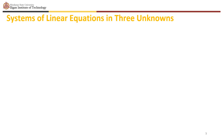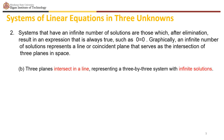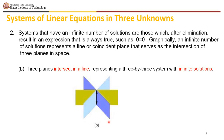Systems that have an infinite number of solutions are those which, after elimination, result in an expression that is always true, such as 0 equals 0. Graphically, an infinite number of solutions represents a line or coincident plane that serves as the intersection of three planes in space. Notice that the intersection is actually a line. The first plane is colored violet, the second plane is colored blue, and the third plane is colored green.